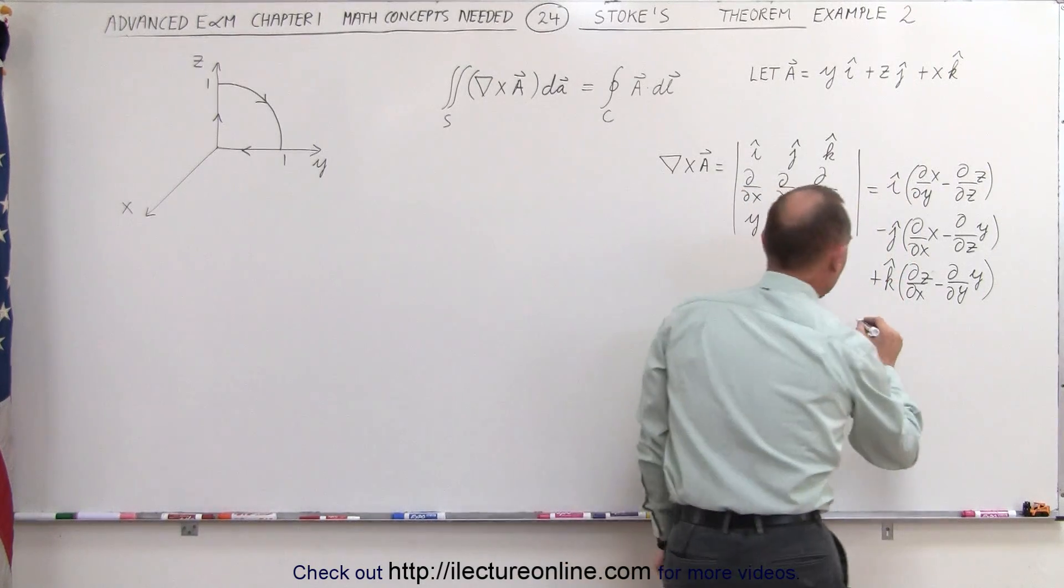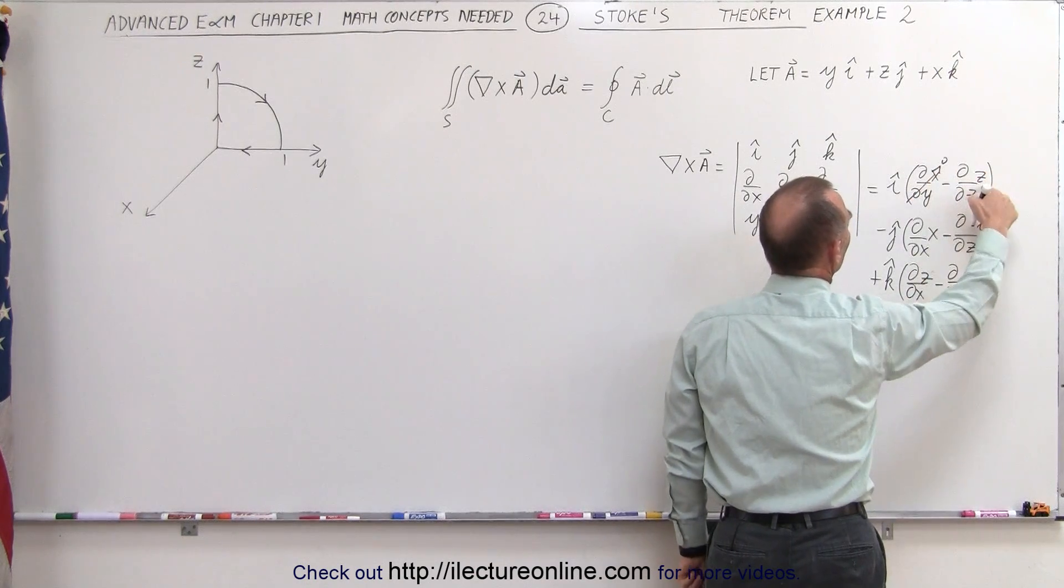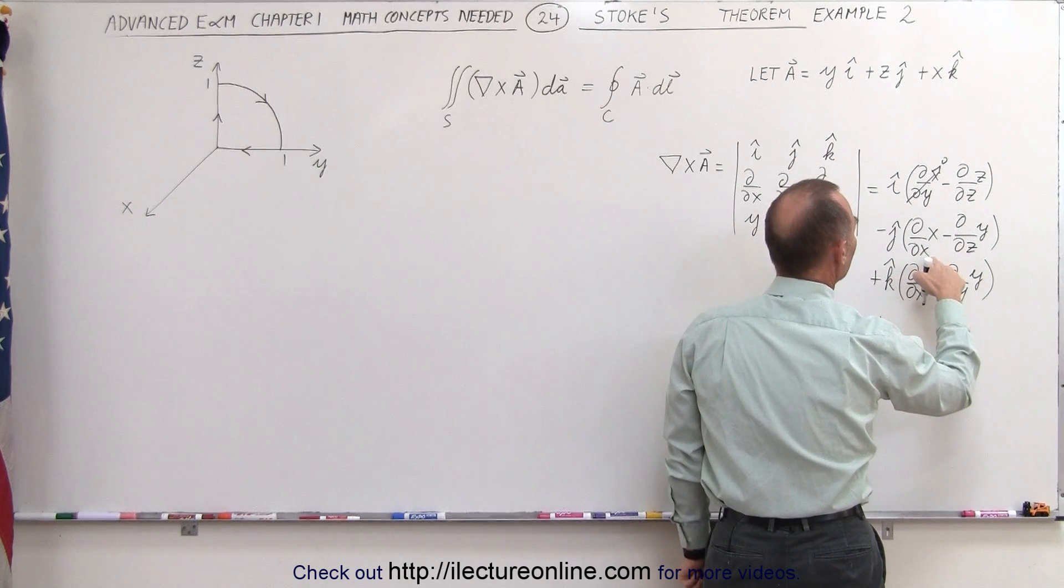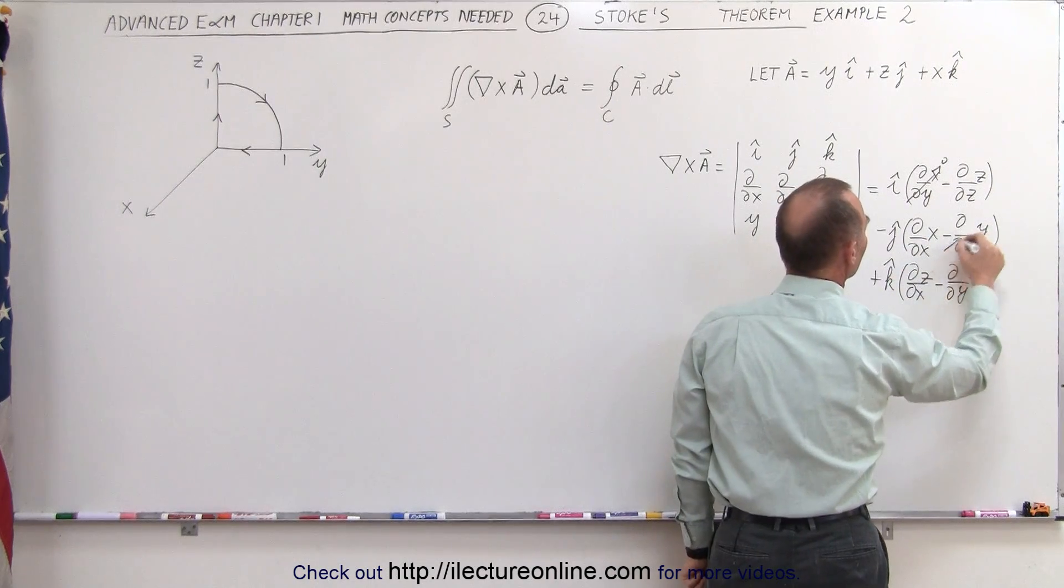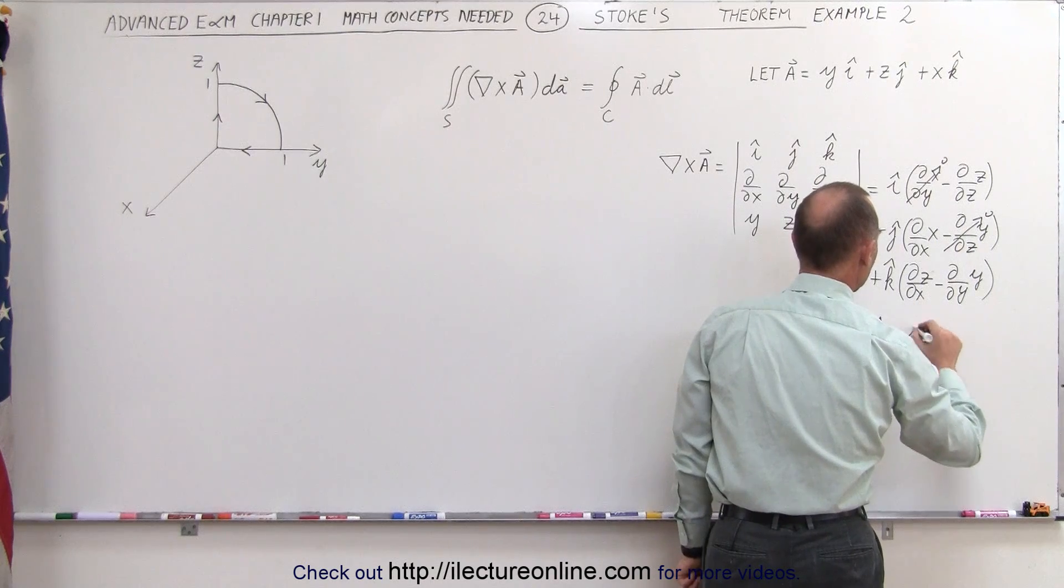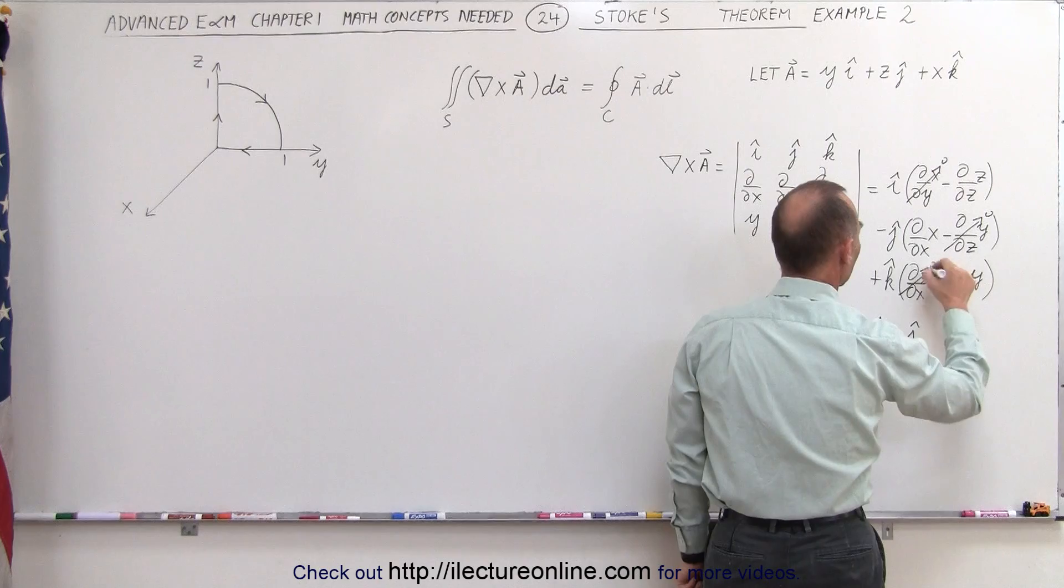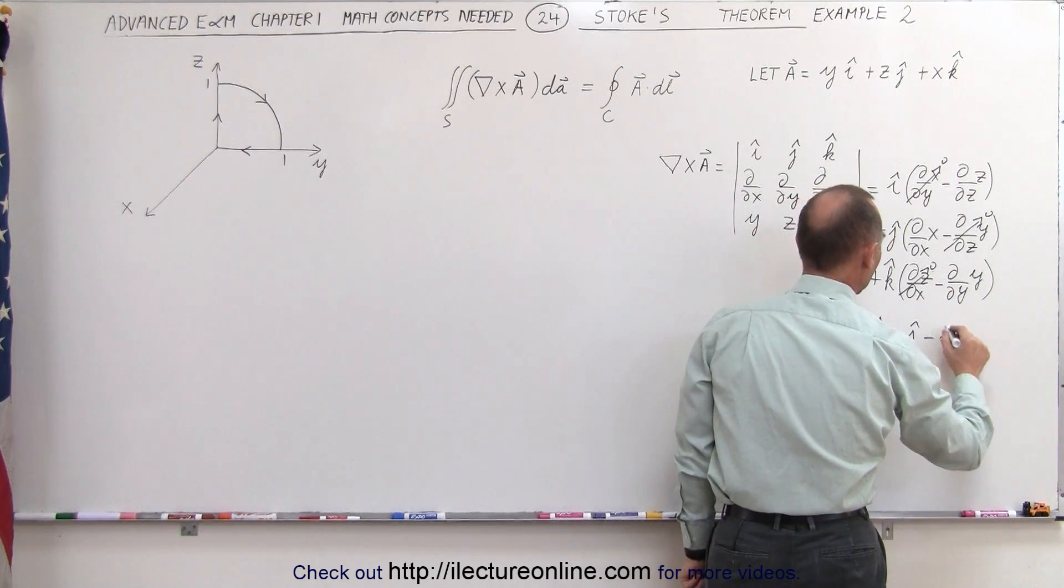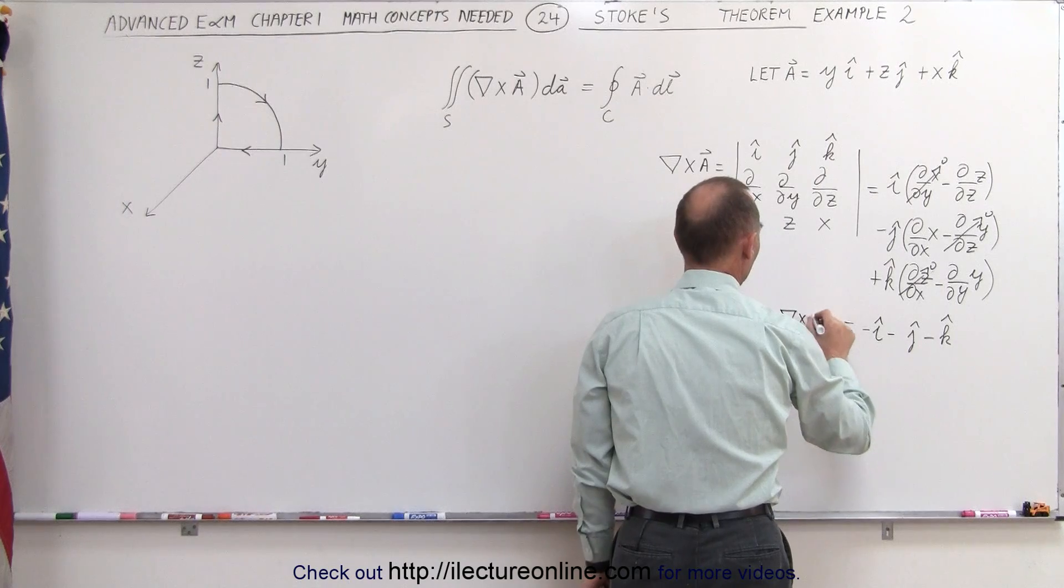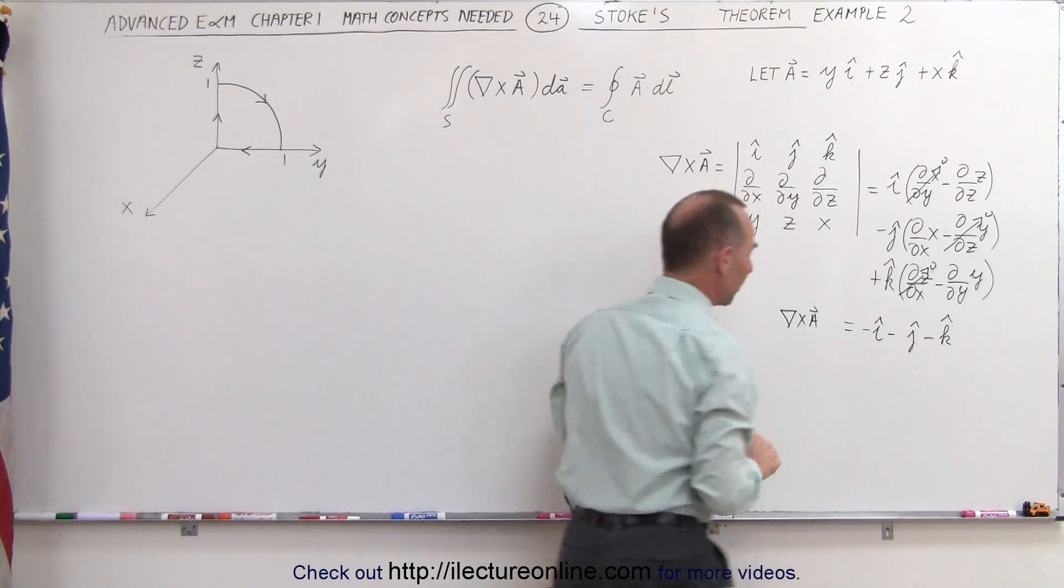This is equal to, that would be 0, and this would be 1, that would be minus i, this would be 1, and this would be 0, so it would be minus j, and this would be 0, and that would be 1 minus k. That means that the curl of A is equal to minus i minus j minus k.